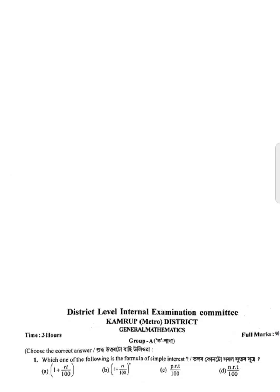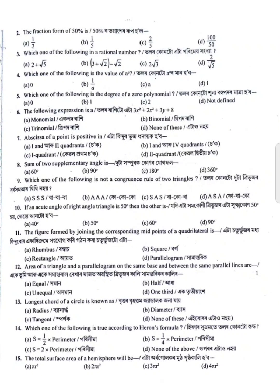Let's start this video. Choose the correct answer. First, the simple interest formula is PRT divided by 100 — answer C is correct. Then number two: the fraction of 50 percent is 50 divided by 100, and the correct option is one by two.